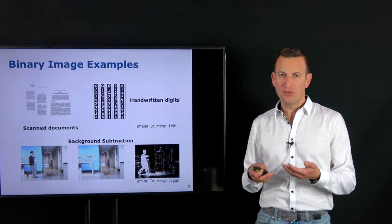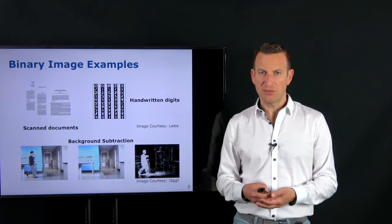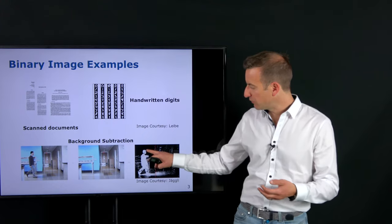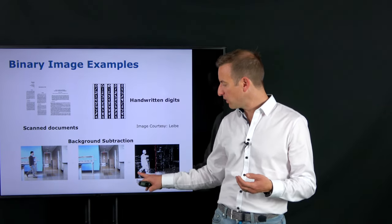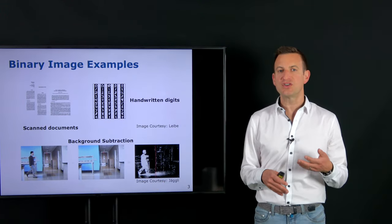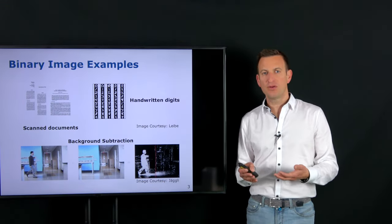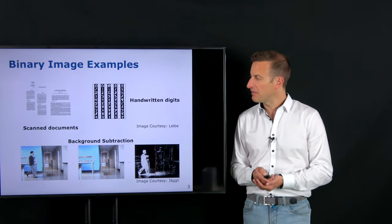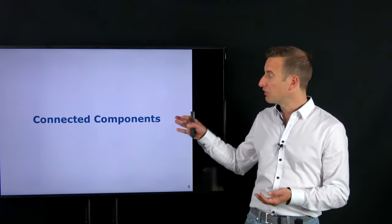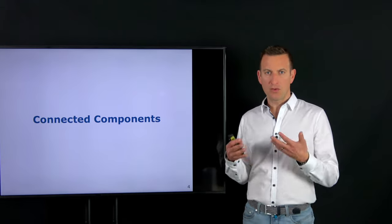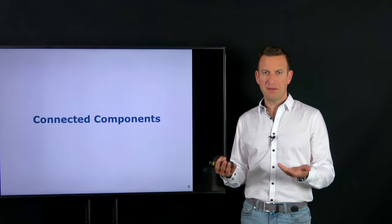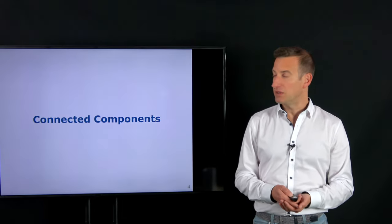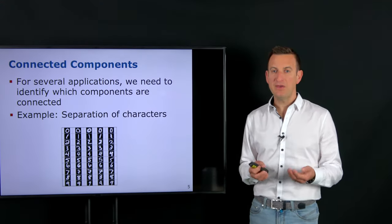There are a large number of reasons why you may want to work with binary images. We will look into some very common problems. The first is computing connected components — identifying those regions which are connected to each other. For example, we may want to identify a person as one single region. To estimate that, it's important to know which pixels actually form one object or belong together, which is what connected components computes.